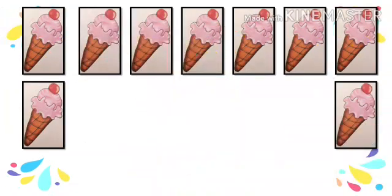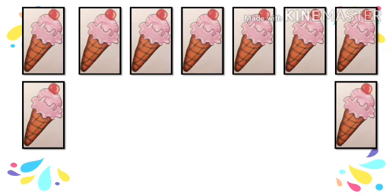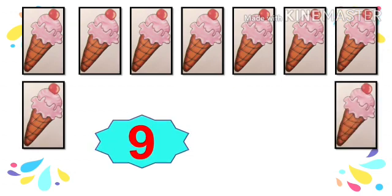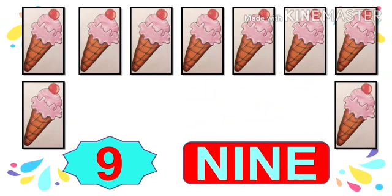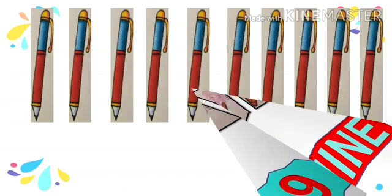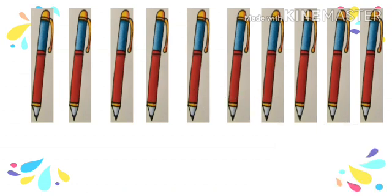Eight yummy ice creams! Count the number of ice creams: 1, 2, 3, 4, 5, 6, 7, 8, 9. Total 9 ice creams. N-I-N-E, 9. Numbers from 1 to 9 are one-digit numbers.